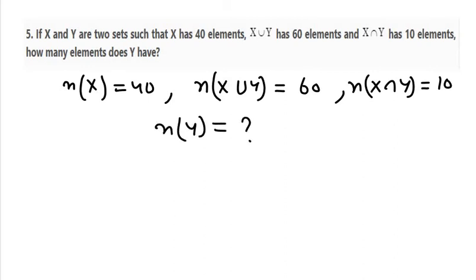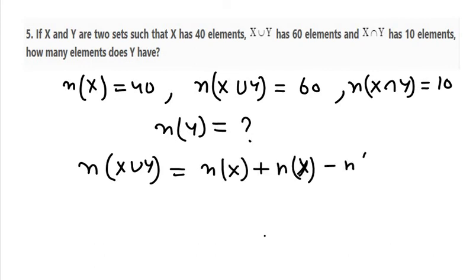So let us use the equation again. So n(X∪Y) equals n(X) plus n(Y) take away n(X∩Y). Now we know the n(X∪Y), we know n(X), we know n(X∩Y), so putting all the values we will get the n(Y). n(Y) is not known to us.